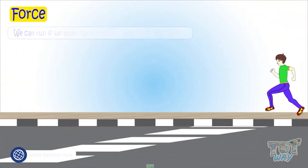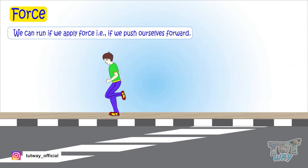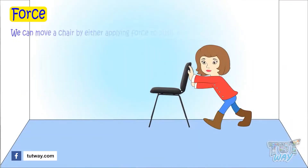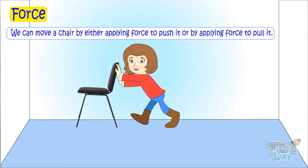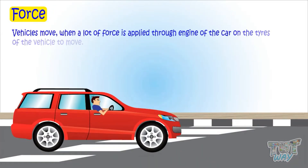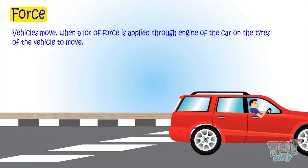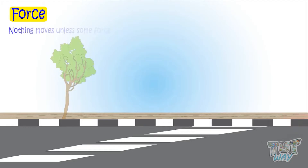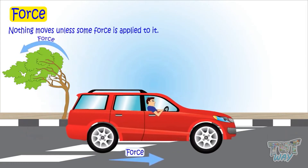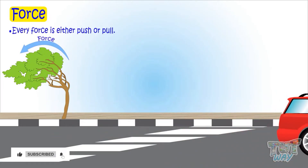We can run if we apply force — that is, we push ourselves forward. We can move a chair by either applying force to push it or applying force to pull it. Vehicles move when lots of force is applied through the engine of the car on the tires. Nothing moves unless some force is applied to it, and every force is either push or pull.